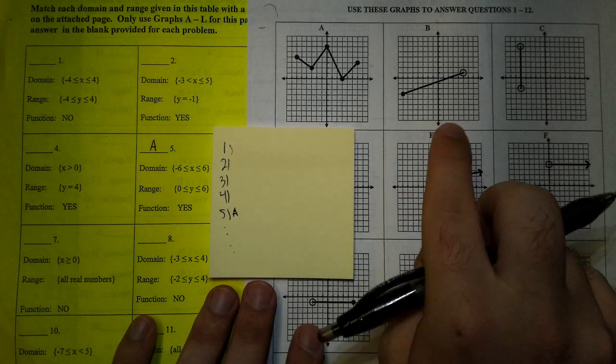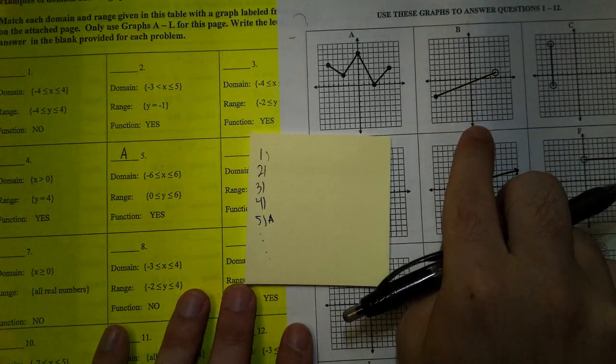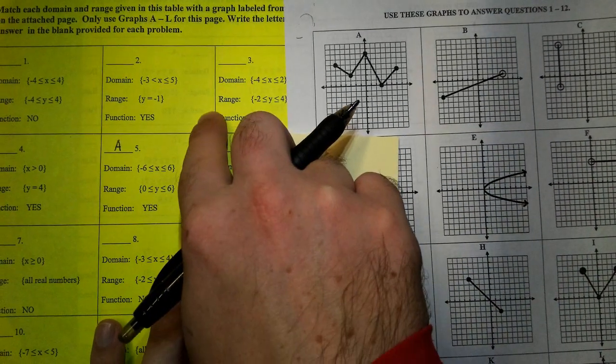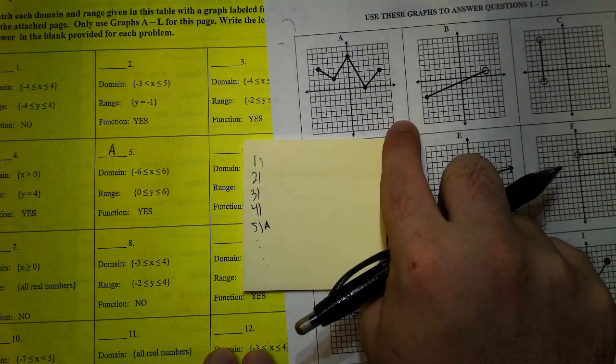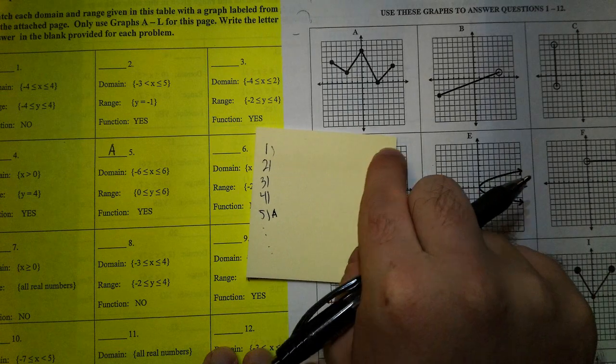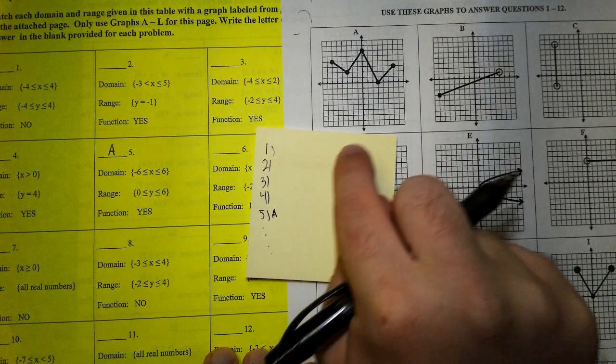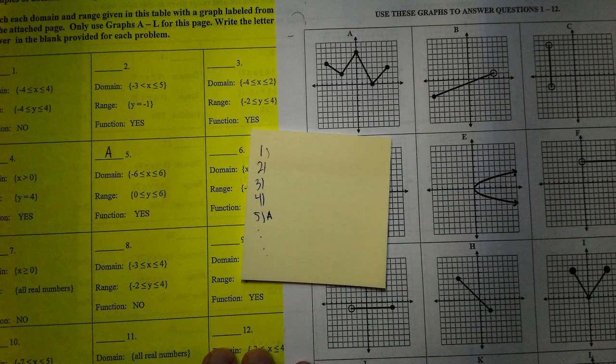So every single one of these graphs will have a domain and range that matches up with what's on 1 through 12. You're going to look at the domain and range, look at the graph and make sure they match, and then write whatever number matches with that letter.